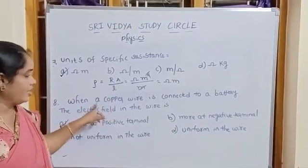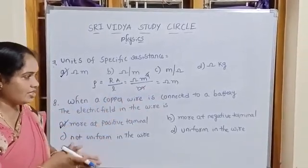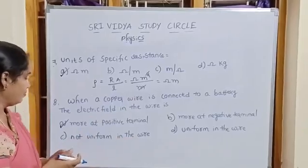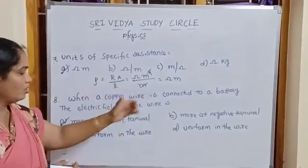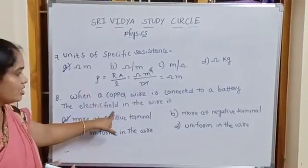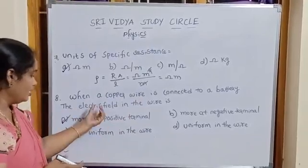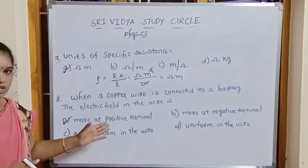when a copper wire is connected to battery, battery set up the charge direction into ordered motion. Here electrons generally move negative terminal to positive terminal. Electric field direction is opposite to the electron direction. That electric field adjusts more at positive terminal.